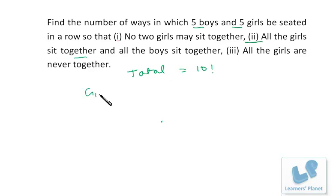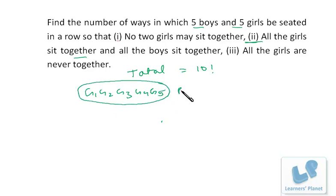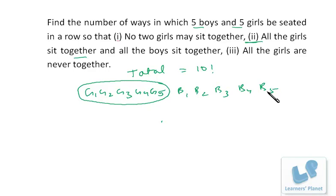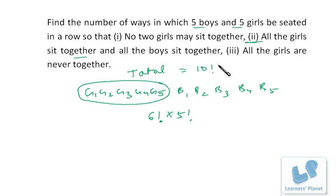We take all the girls as one — G1, G2, G3, G4, G5 — treating them as one person, along with Boy 1, Boy 2, Boy 3, Boy 4, Boy 5. The boys don't have to be together. So we have six places to arrange six persons, which can be done in 6! ways. These five girls mutually arrange themselves in 5! ways. So the arrangements when all the girls are together is 6! × 5!.